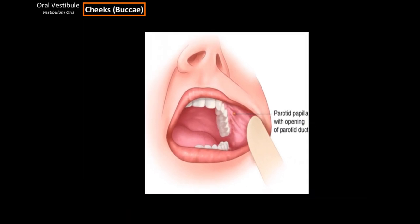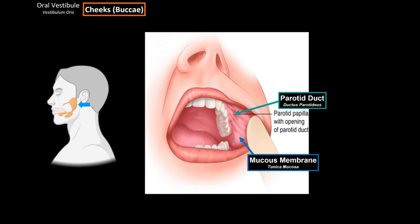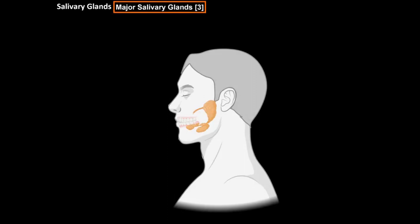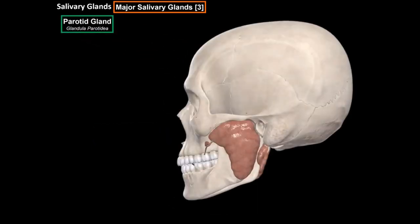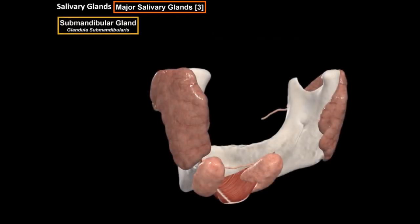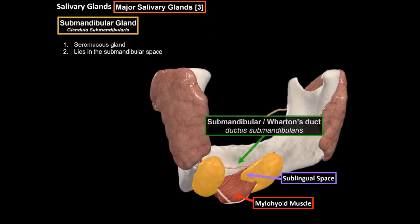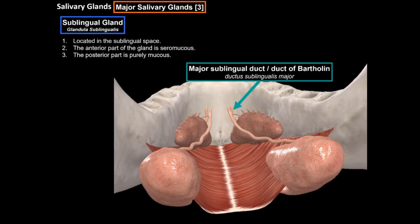Looking at the inside of the cheeks, you'll find the opening of the parotid duct, also known as Stenson's duct, which is the major duct of the parotid gland. Around this opening is the papilla of the parotid duct. Each of the three salivary glands has its own duct: the parotid gland has Stenson's duct, the submaxillary gland has Wharton's duct, and the sublingual gland has Bartholin's and Rivinus' ducts.